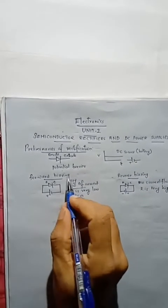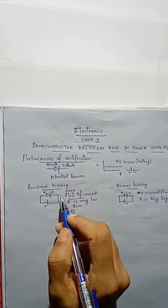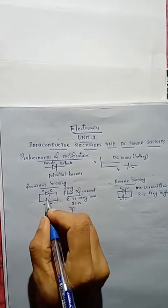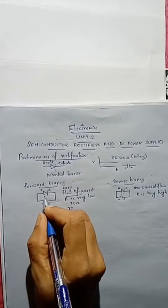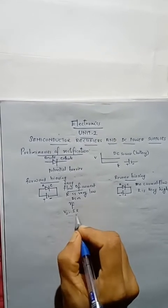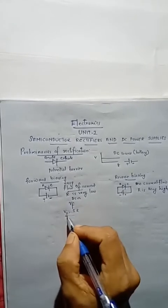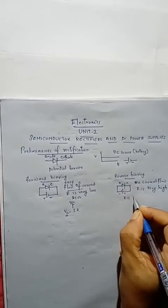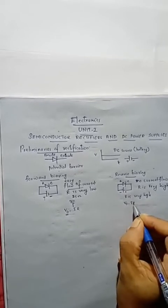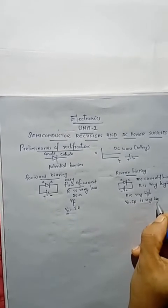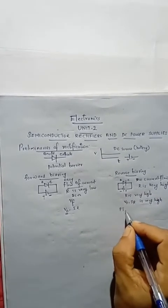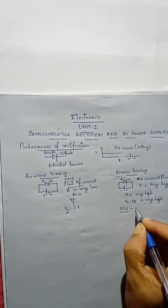These are the two cases of biasing in a PN junction diode. Since the resistance in forward bias is very low, the voltage drop across the diode will be very low. But in reverse bias, R is very high, so the drop across the diode — that is I into R — is very high. There is a chance of the diode breaking down. So the diode has a special characteristic voltage known as the Peak Inverse Voltage, or PIV.